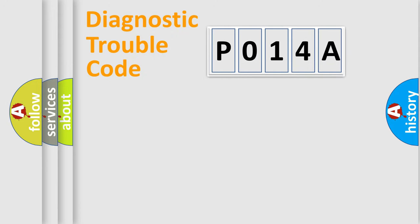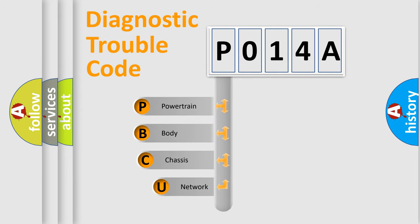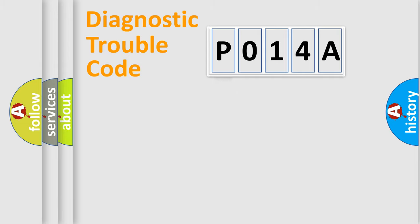Let's do this. First, let's look at the history of diagnostic fault code composition according to the OBD2 protocol, which is unified for all automakers since 2000. We divide the electric system of an automobile into four basic units: Powertrain, Body, Chassis, and Network.